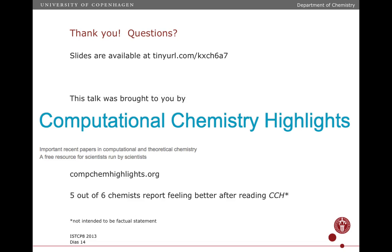Q&A: One question was whether you could use chemical shifts as a penalty function in simulated annealing for structure refinement. Yes — some of the Monte Carlo runs we're doing are simulated annealing where we change the structure. One reason we use Monte Carlo rather than MD simulated annealing is that we don't have gradient terms for any of these energy components, so MD simulated annealing would require reformulating the method. But in principle, yes.